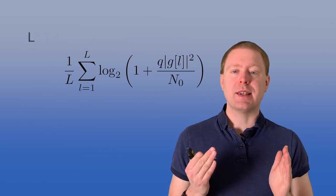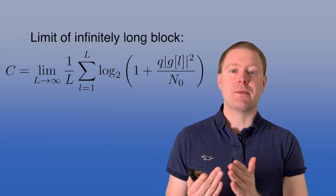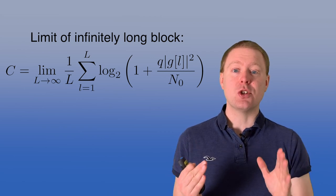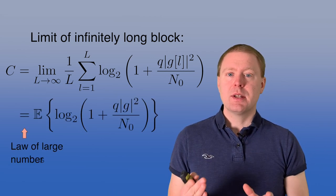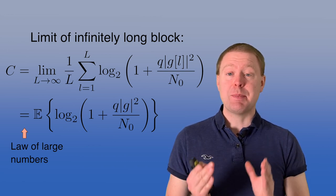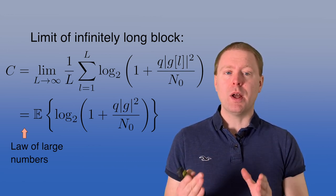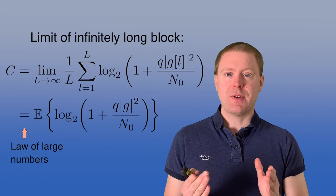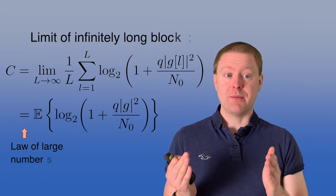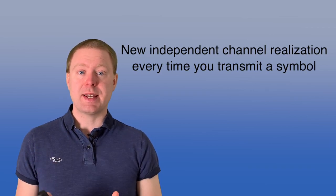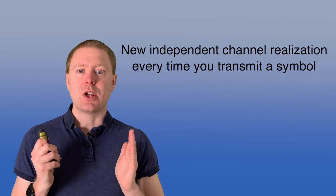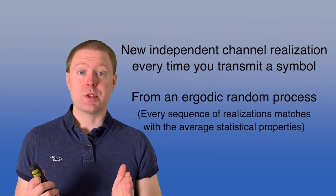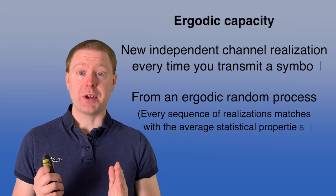Then you take the limit as L goes to infinity to consider an infinitely long block of data, and then you achieve your capacity. By the law of large numbers, this converges to the expected value of log₂ of 1 plus Q times the absolute value squared of G, which is a random variable, divided by N₀. The underlying assumption is that you get a new independent realization of the channel every time you transmit something, and they come from an ergodic random process — therefore it's called the ergodic capacity.